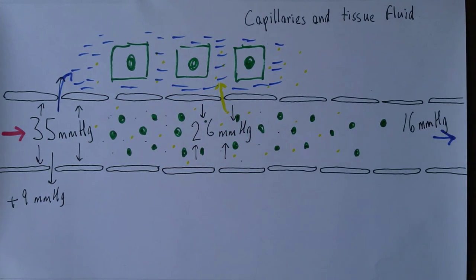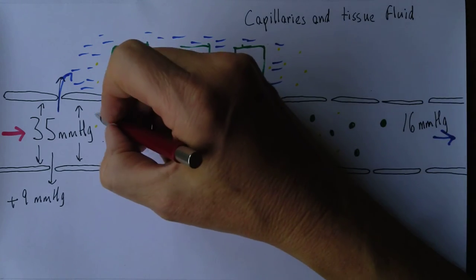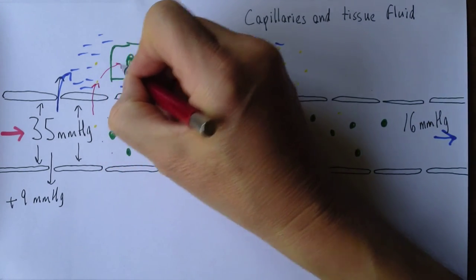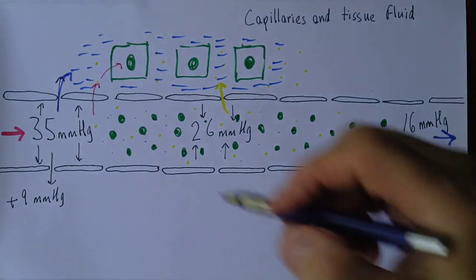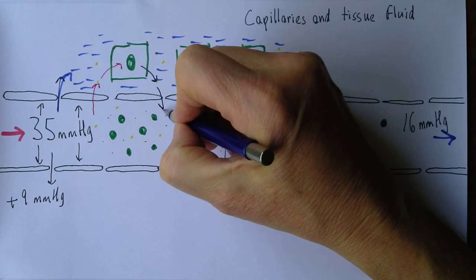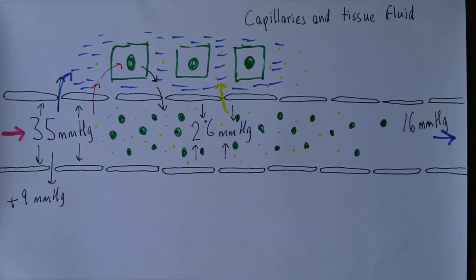Oxygen doesn't jump directly to the cells — the oxygen from the red cells goes to the tissue fluid before it goes into the cells. Carbon dioxide from the cells goes into the tissue fluid, as do nutrients, vitamins, minerals, and waste products. They all diffuse through this medium of the tissue fluid.